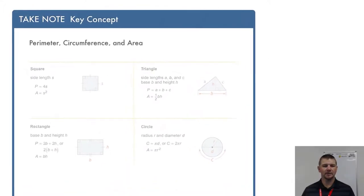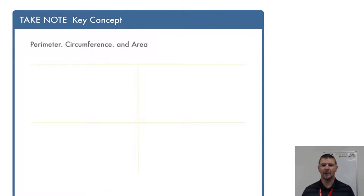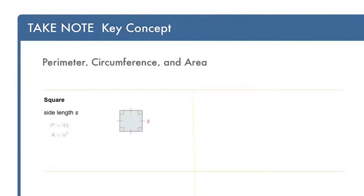Take note, key concept: perimeter, circumference, and area. First, a square. We can see a square shown here with four right angles, four congruent sides, and a side length labeled s. The perimeter P of a square is simply 4s, or four times the side length. The area of the square is s squared.